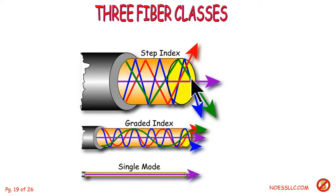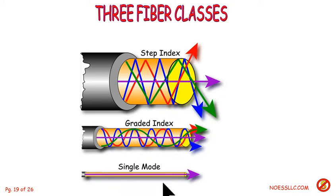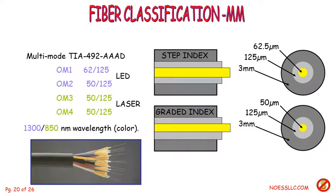In step index, if beams are launched at the same time, they don't all arrive at the same time because some are bouncing more times than others. In graded index, they tend to get bent rather than bounced. In single mode, they go straight through so they don't bounce around. You can pulse single mode fiber at much higher bit rates because you don't have this thing called pulse spreading.